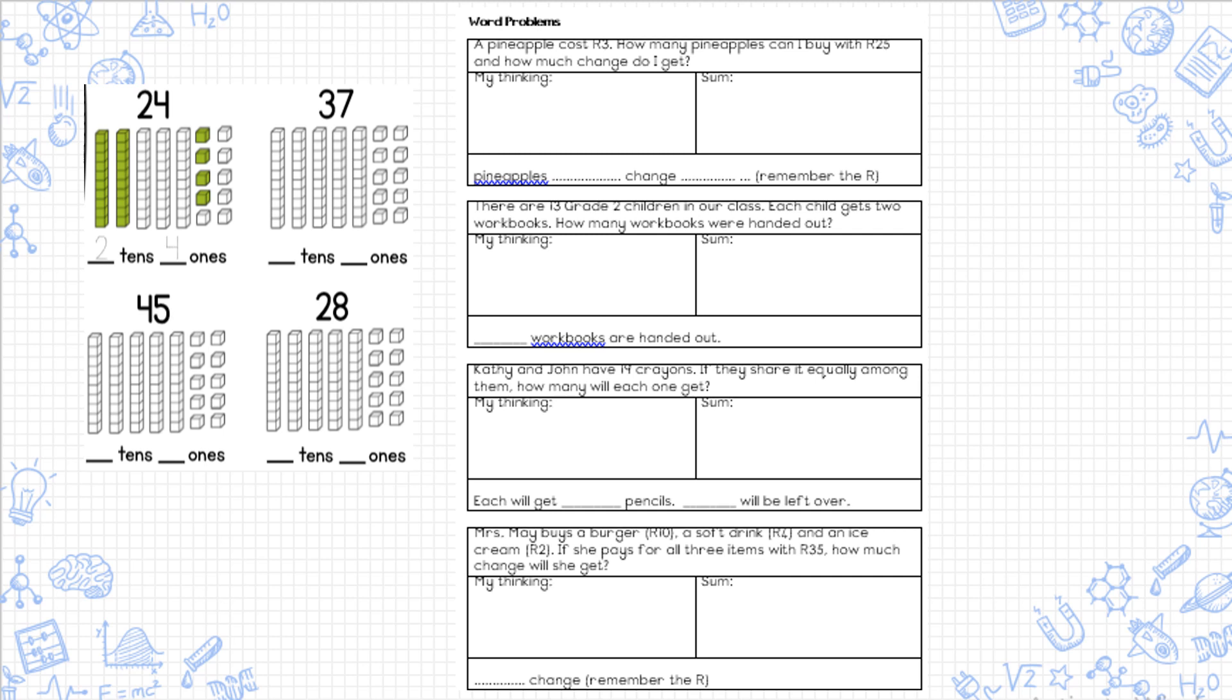Katie and John have 19 crayons. If they share it equally among them, how many will each one get? Share equally is your clue in that sum.